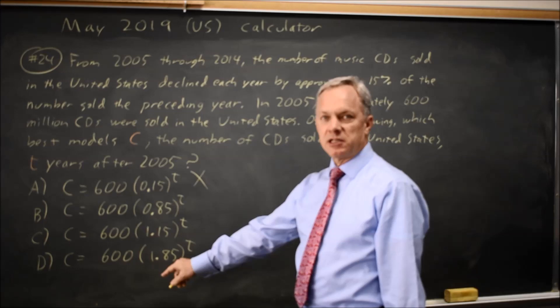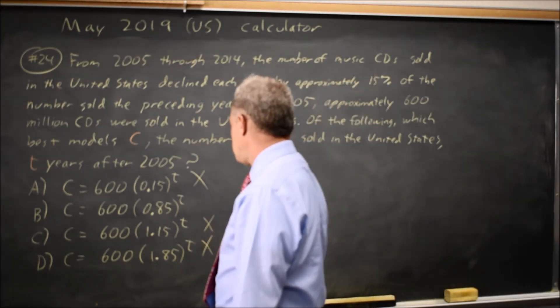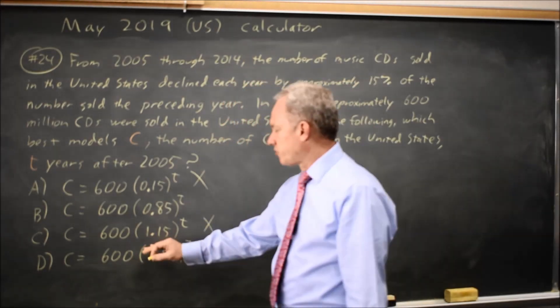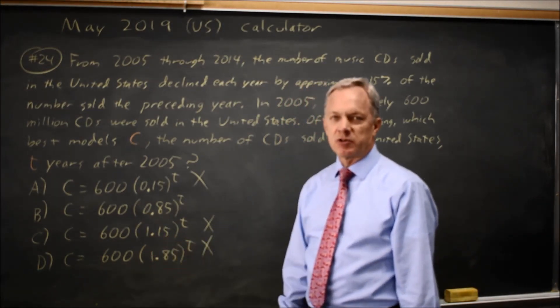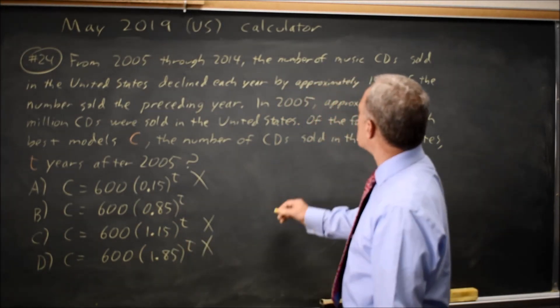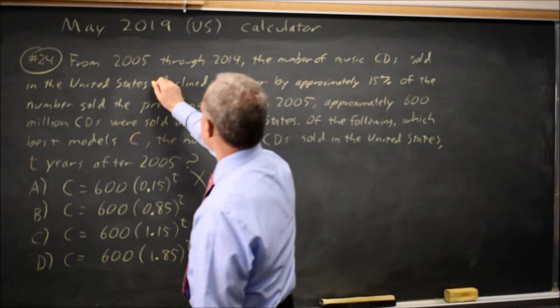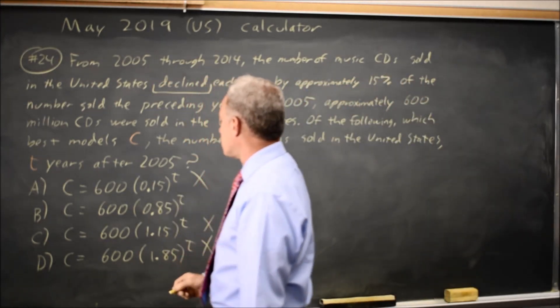Choices C and D show an increase. In choice C, we increase by 15% each year. In choice D, we increase by 85%. But we're told the number of CDs sold declined. So C and D are wrong.